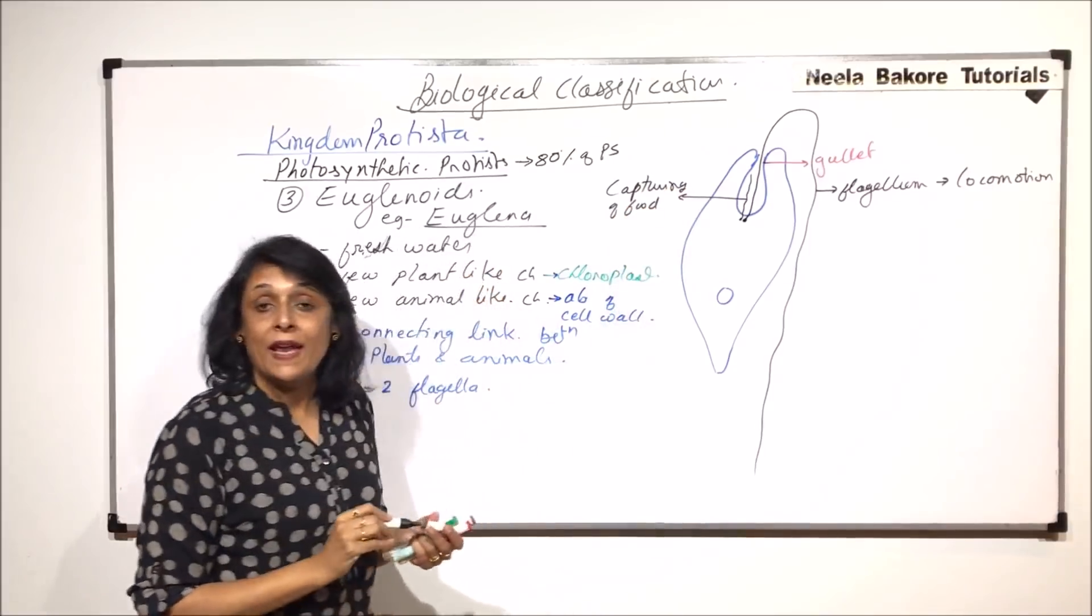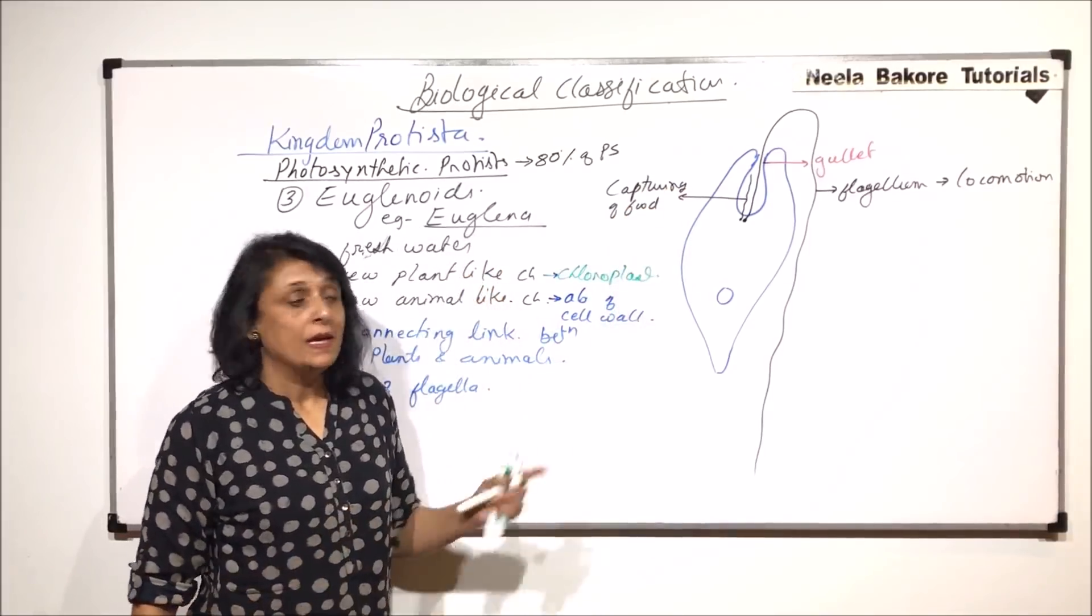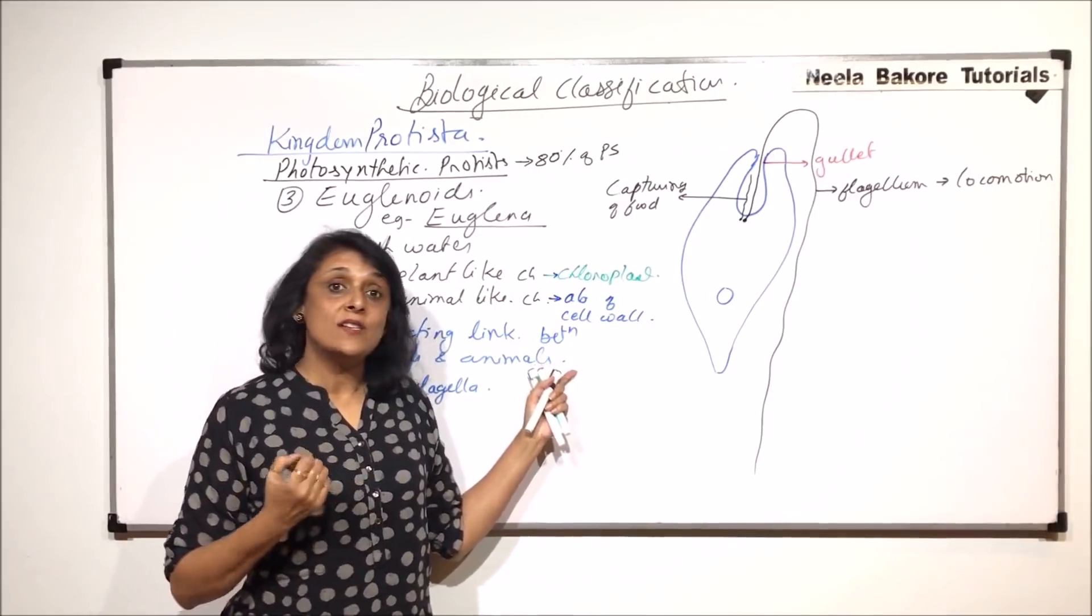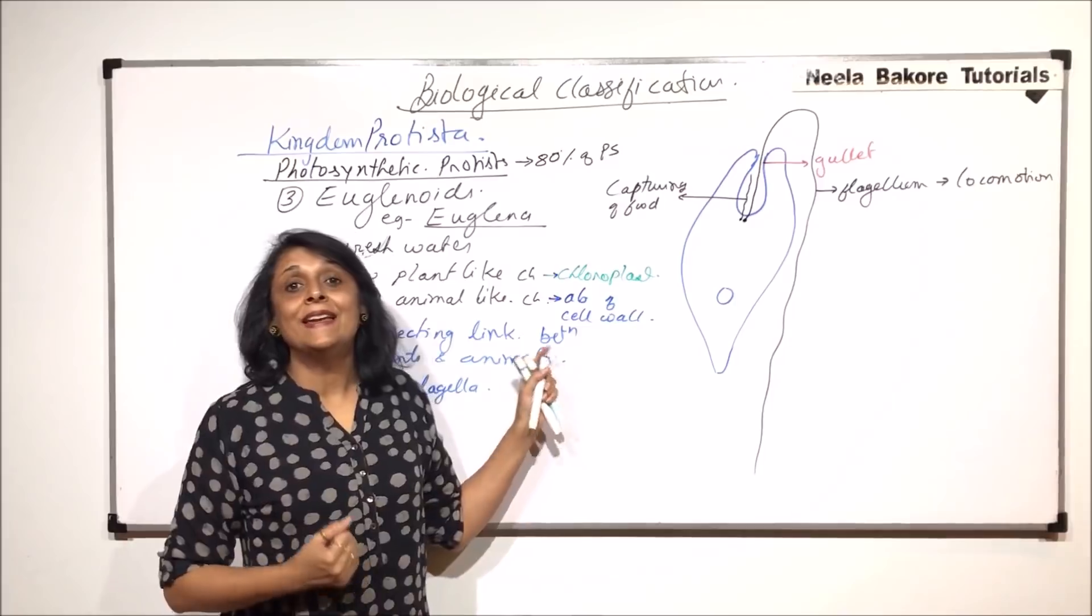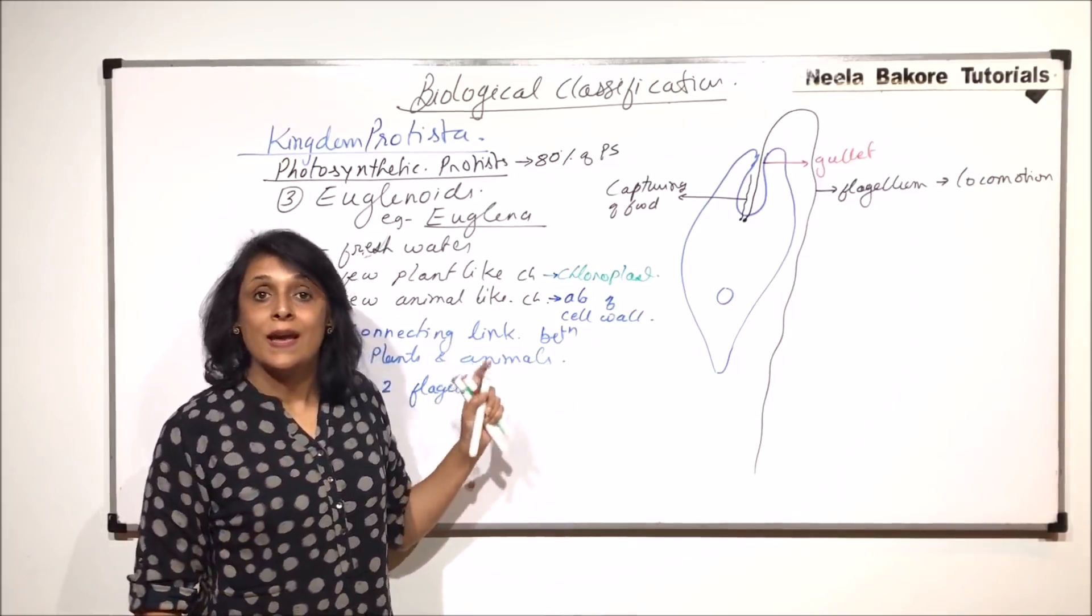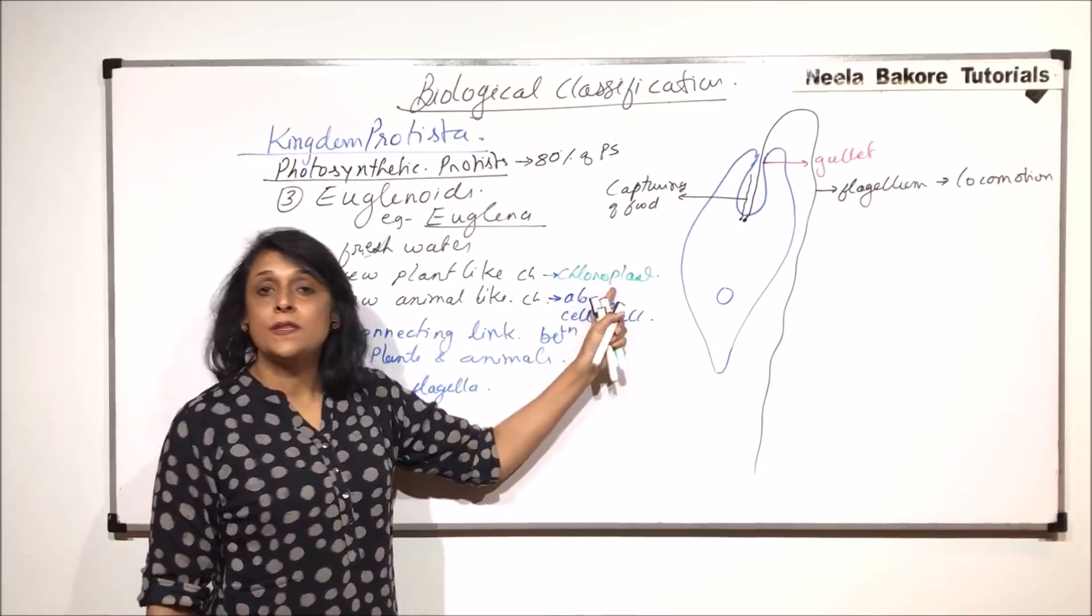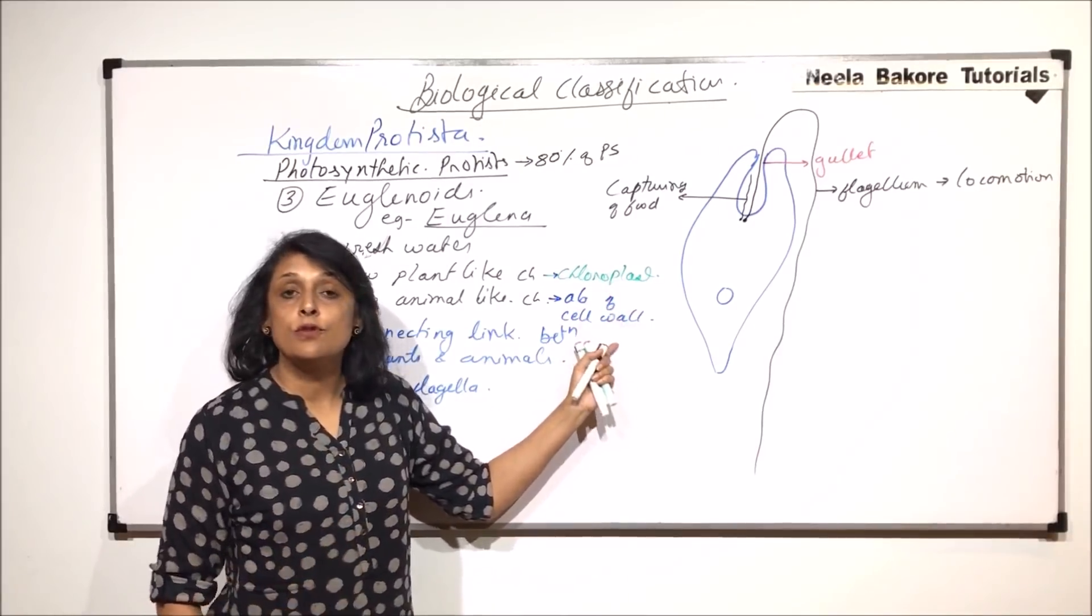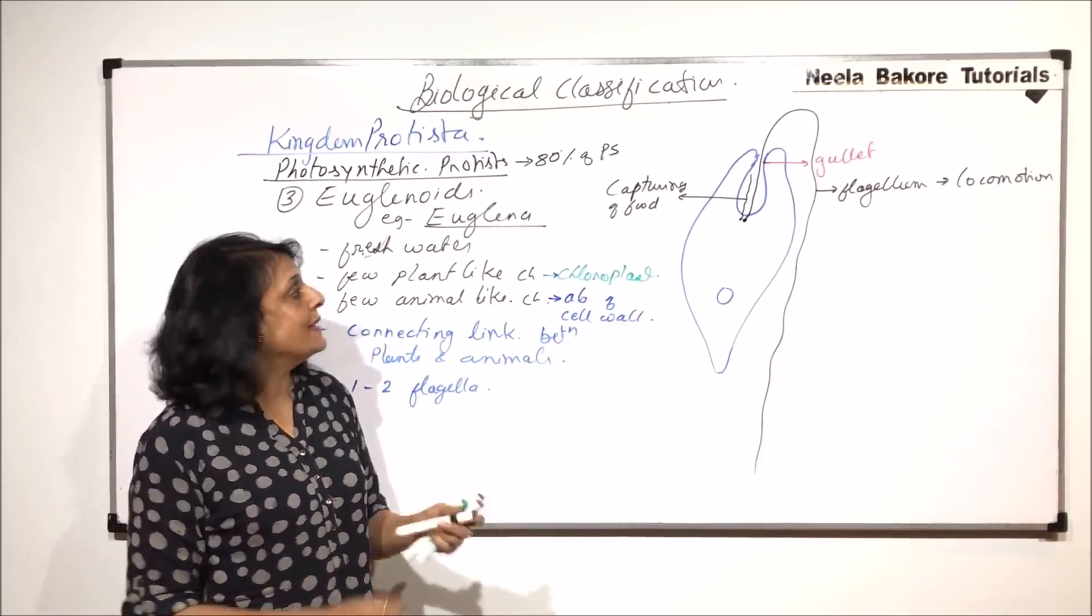When sunlight is available, they perform photosynthesis. But if sunlight is not available, they engulf particles and become holozoic. Again, photosynthesis is plant-like character and holozoic mode of nutrition is animal-like character.